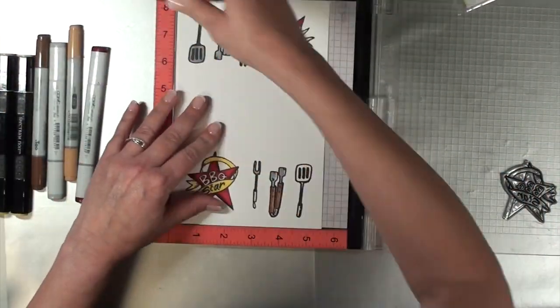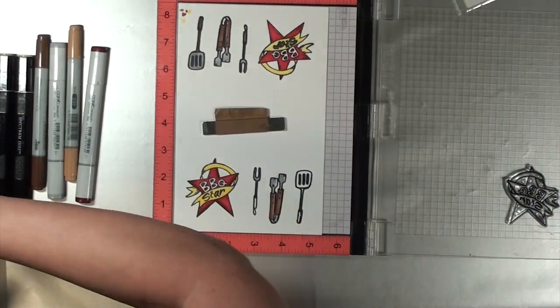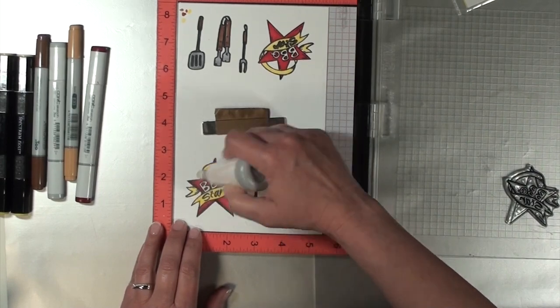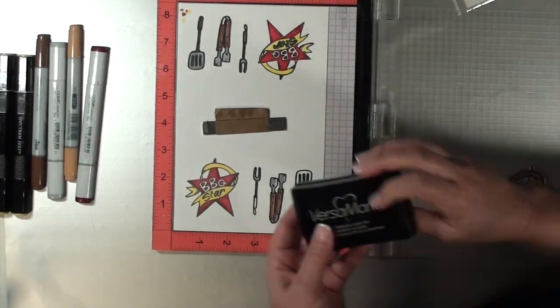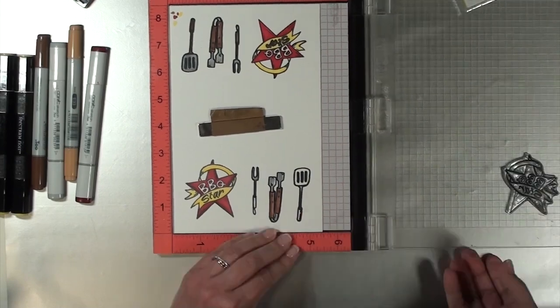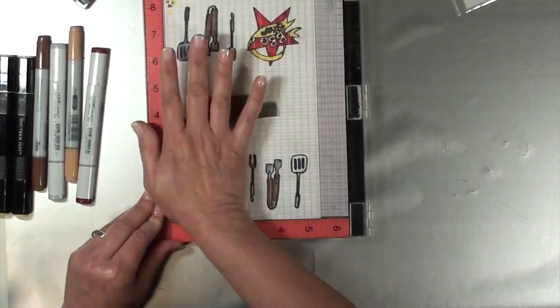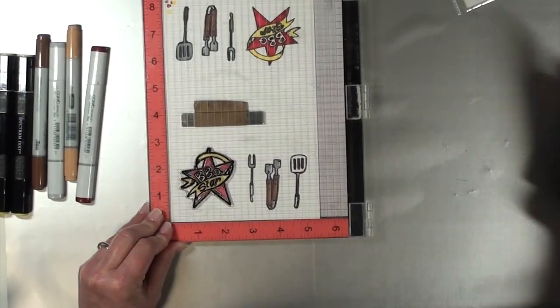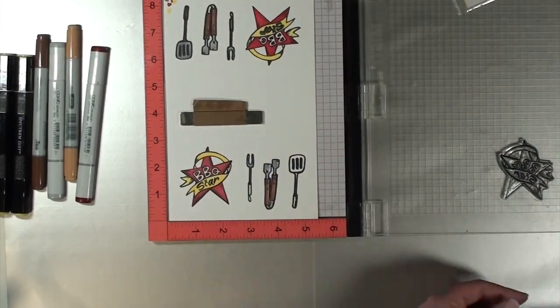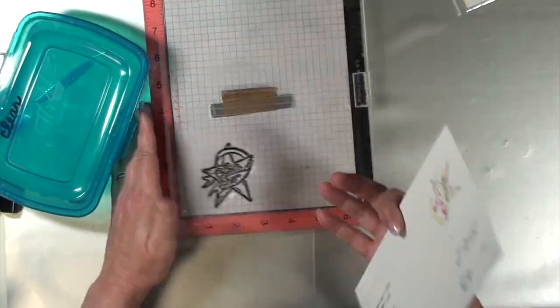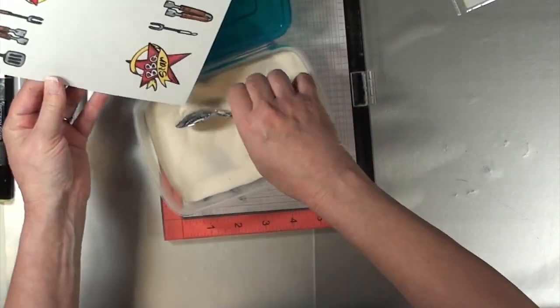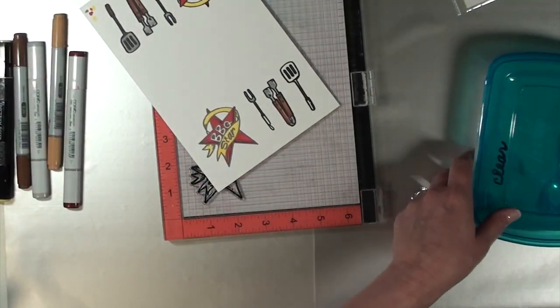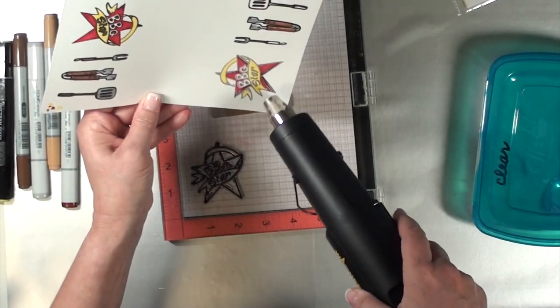Now I'm going to go in and I'm going to re-stamp over that and I'm going to be using clear Versamark ink so that I can just use some clear embossing powder over the star. That way, even if it happens to not be exactly perfectly lined up, which it really should be, then the clear embossing powder really is not going to call any attention to that at all. It's just going to emphasize the color that's already underneath it.